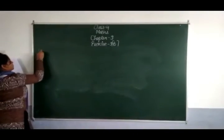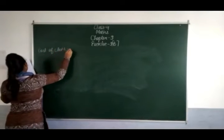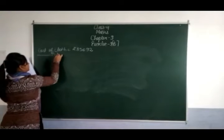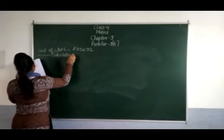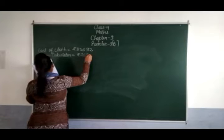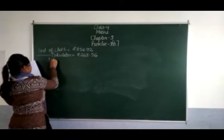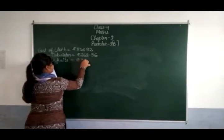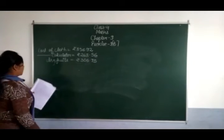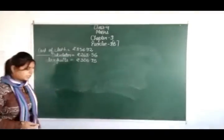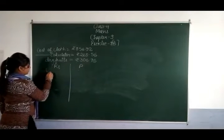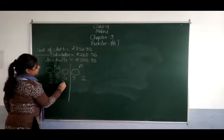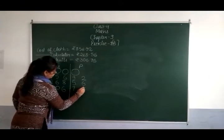Cost of clothes: 856 rupees 92 paise। Cost of a calculator: 268 rupees 56 paise। Dry fruits: 306 rupees 75 paise। Total money spent — column बना लेंगे rupees and paise: 856 rupees 92 paise, 268 rupees 56 paise, and 306 rupees 75 paise।